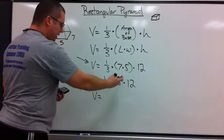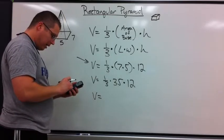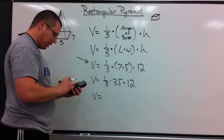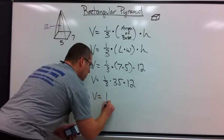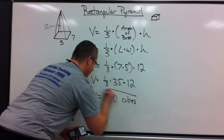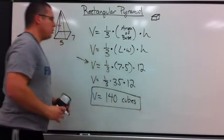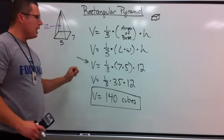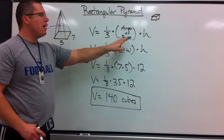1/3 times 35 times 12, 1 fraction 3, times 12, times 35, equals 140 cubes. We're not going to do surface area, just volume. Looks complicated, it isn't. 1/3 times area of the base times height.